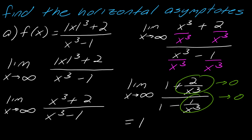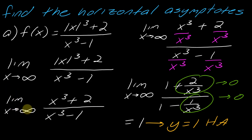So this limit will equal 1. What you want to do after evaluating the limit is state your horizontal asymptote. In this case the horizontal asymptote is y equals 1. It's not enough just to evaluate the limit — you do want to actually interpret it. But we're not totally done, because the directions say to find all horizontal asymptotes, so this is only what happened as x went to positive infinity.